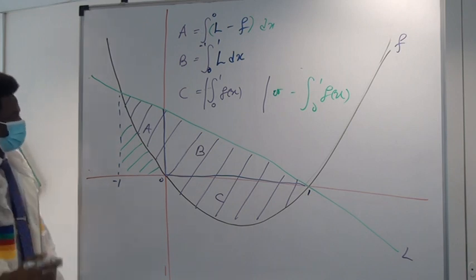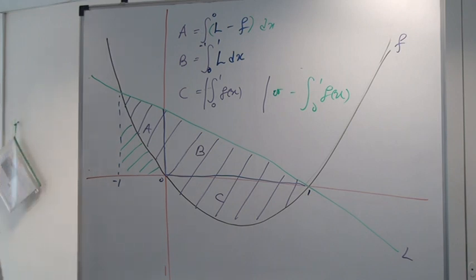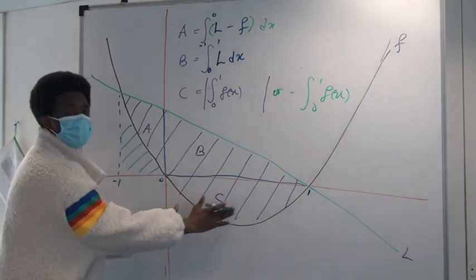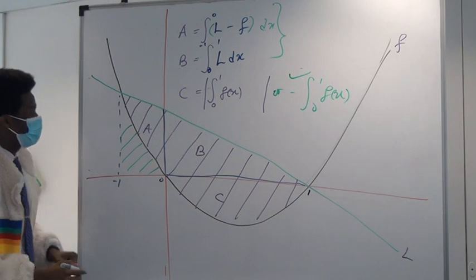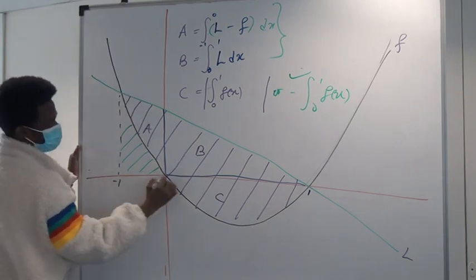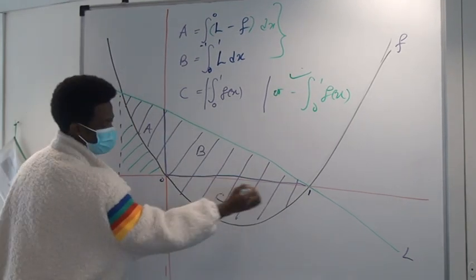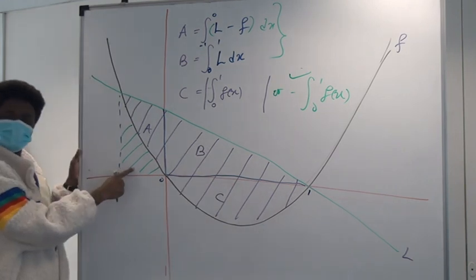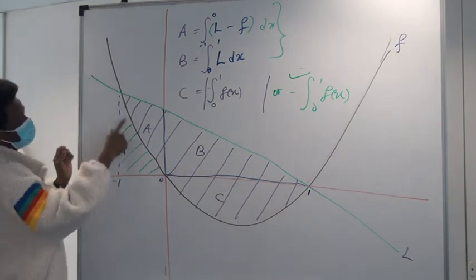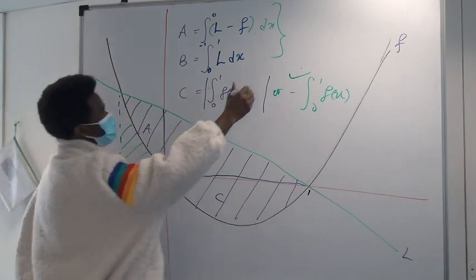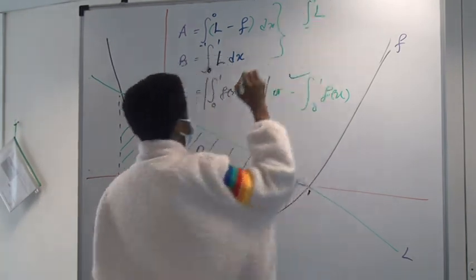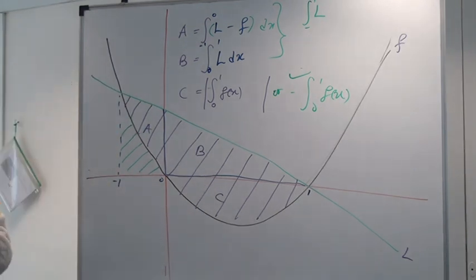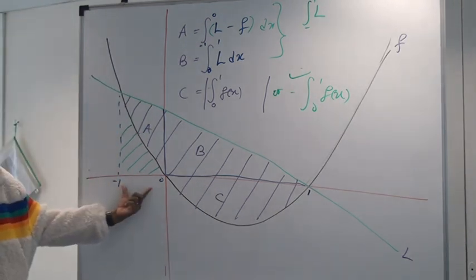Then there's another idea. Instead of that - this is okay, we all agree to this - instead of going about this this way, why don't we find the area of this triangle and remove this area from it? Yes. So you can actually just find the area under the line, which is integral of L between minus one and one, and remove area under the curve.